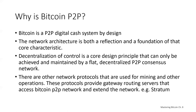Bitcoin's peer-to-peer network architecture is more than a topology choice. Bitcoin is designed to be a P2P digital cash system, and the network architecture is both a reflection and a foundation of that core characteristic. Decentralization of control is a core design principle that can only be achieved and maintained by a flat, decentralized peer-to-peer consensus network.